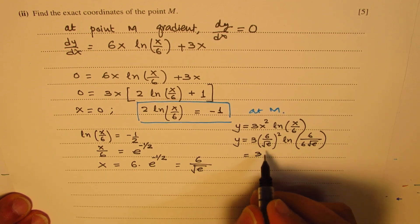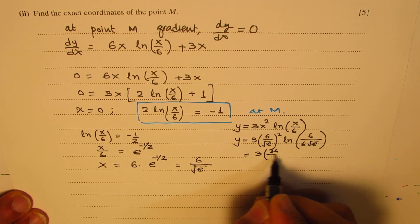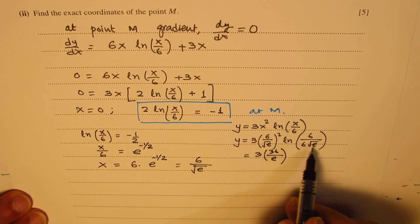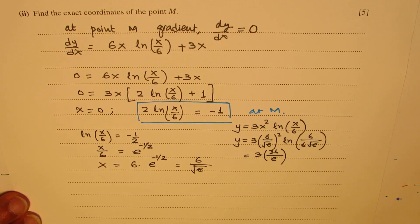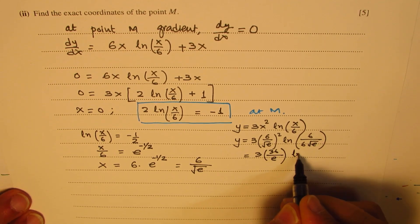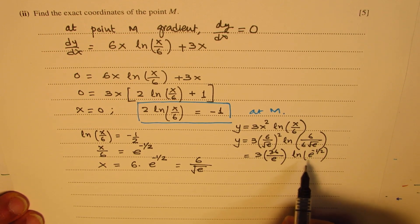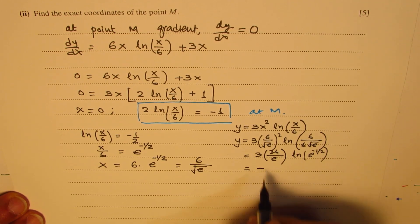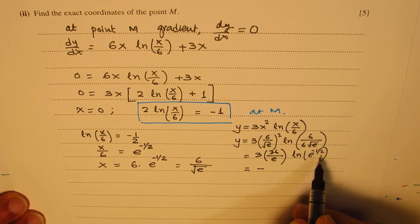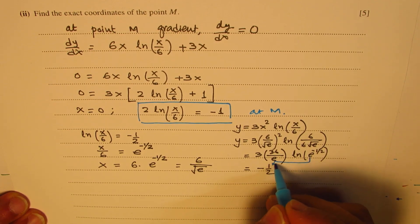And here we get ln, 6 and 6 cancel. We have e to the power of minus half. So we get e to the power of minus half. Or we can write this as, e to the power of minus half. Now that is a reciprocal. So we get here as equal to minus half. So we get negative. This portion here is negative half. This negative half I'm writing for ln(e to the power of minus half), which is minus half.